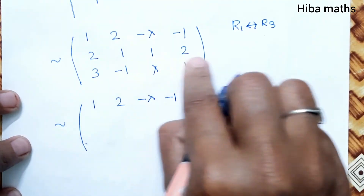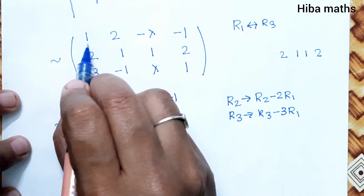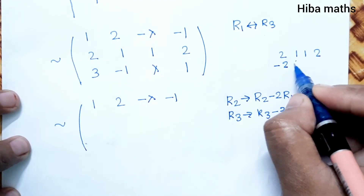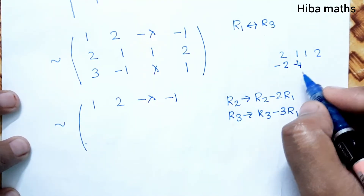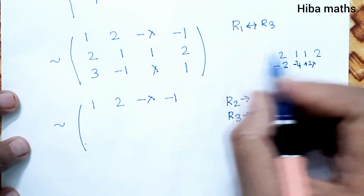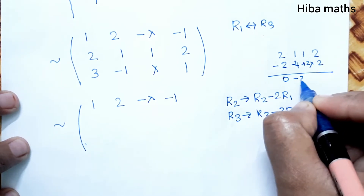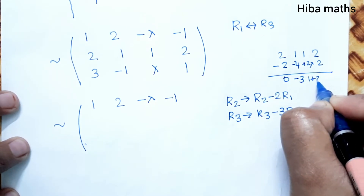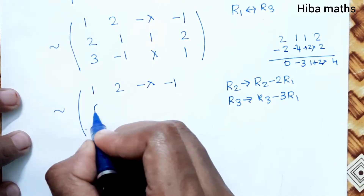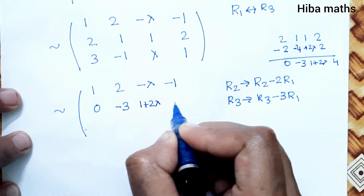For R2 operation, R2 becomes R2 minus 2 times R1. Calculating: 2 minus 2×1 = 0; 1 minus 2×2 = minus 3; 1 minus 2×(minus lambda) = 1 plus 2 lambda; 2 minus 2×(minus 1) = 4. So the new R2 is [0, -3, 1 + 2lambda, 4].